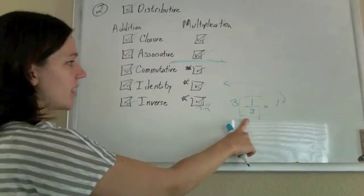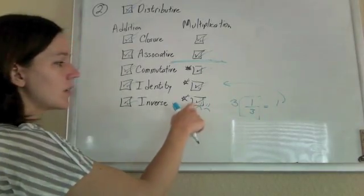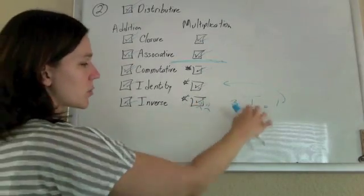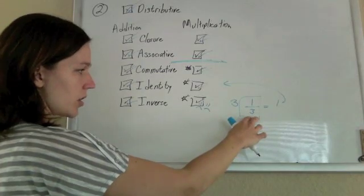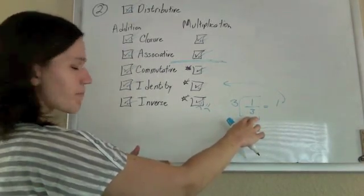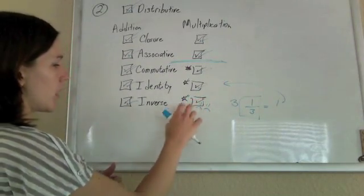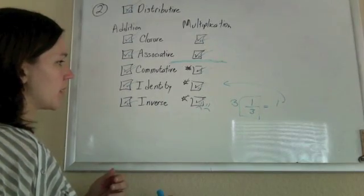But one-third is not an integer anymore. This inverse element must be contained in the original set. So since one-third is not an integer, and that would have to be the inverse element, it doesn't qualify for the requirement of a field.